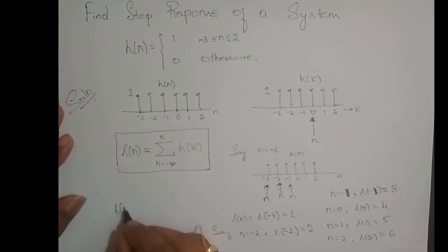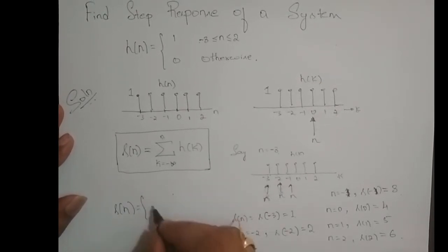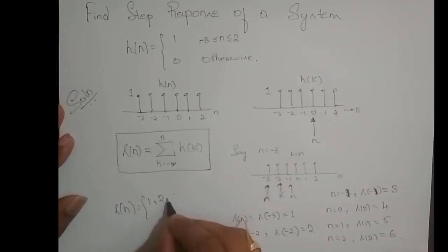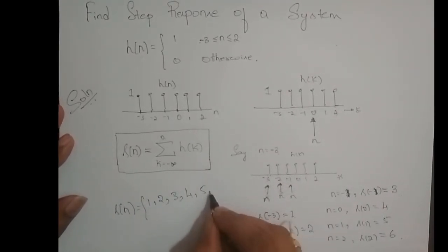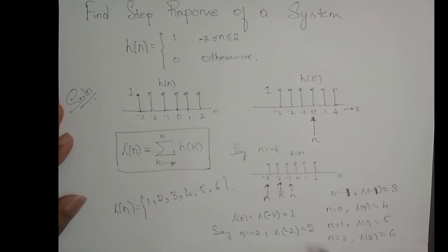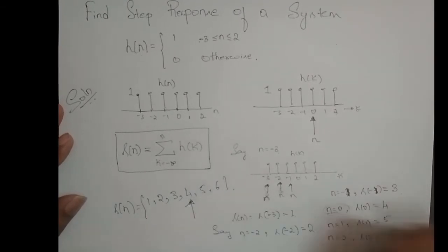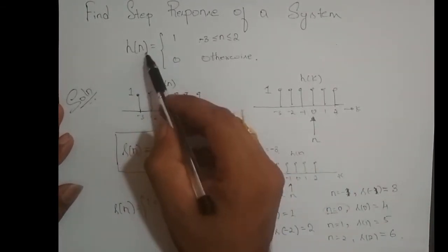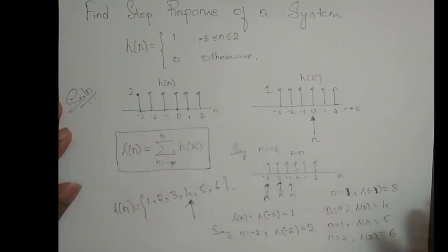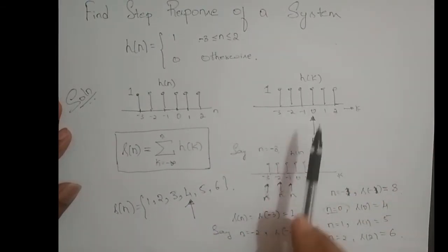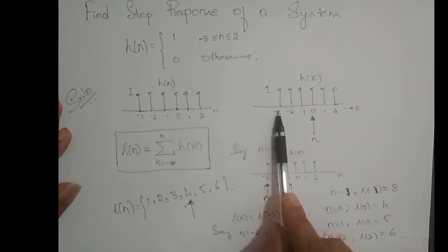Ultimately I can write S of n as: at minus 3 it is 1, at minus 2 it is 2, at minus 1 it is 3, at 0 it is 4, at 1 it is 5, at 2 it is 6. The arrow mark is at n equal to 0 with value 4. This is the step response of the system represented by the impulse response H of n — it is just the running sum of the impulse response.